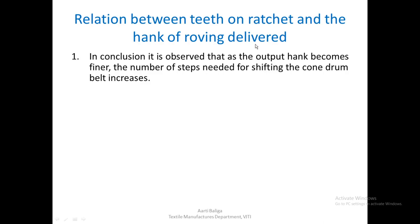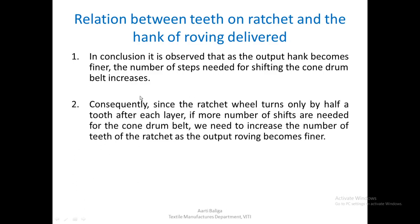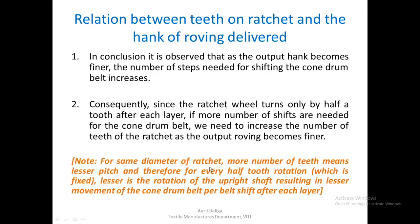As the output hank becomes finer, the number of steps needed for shifting the cone drum belt increases. Since the ratchet wheel turns only by half a tooth after each layer, if more shifts are needed for the cone drum belt we need to increase the number of teeth on the ratchet as the output roving becomes finer. The moment the roving has to become finer, we will have to increase the number of teeth on the ratchet.